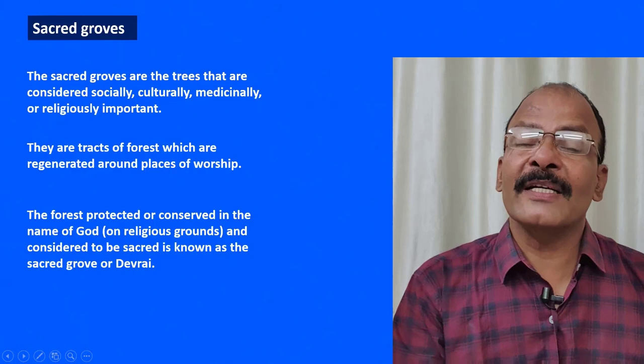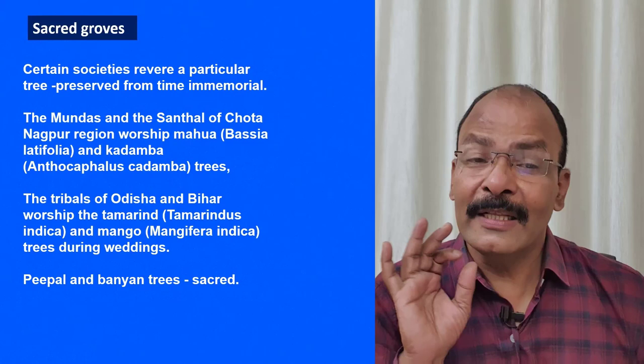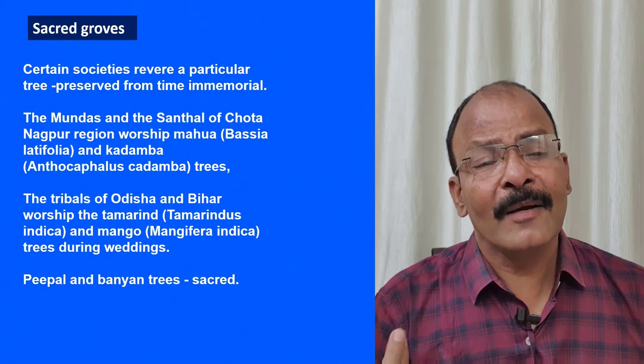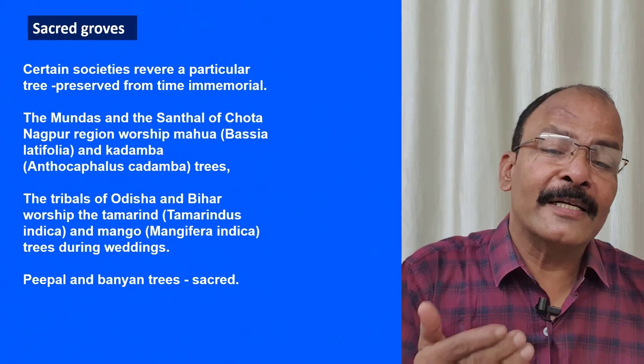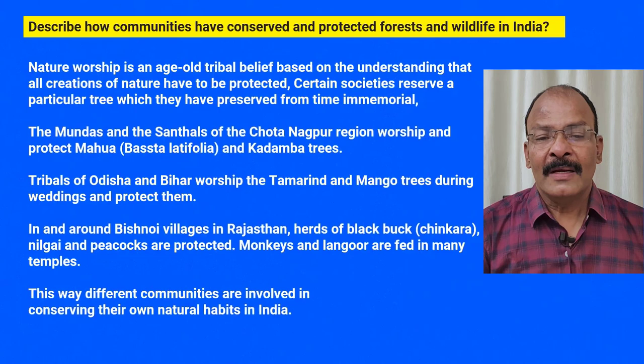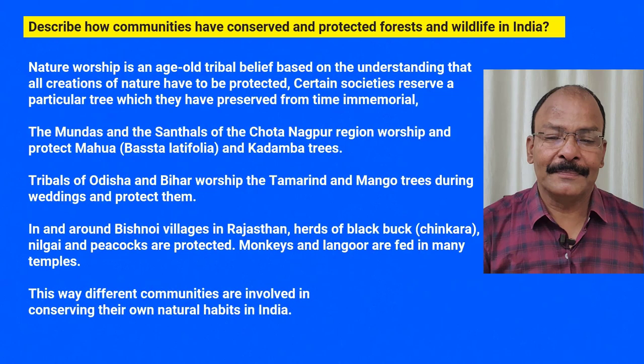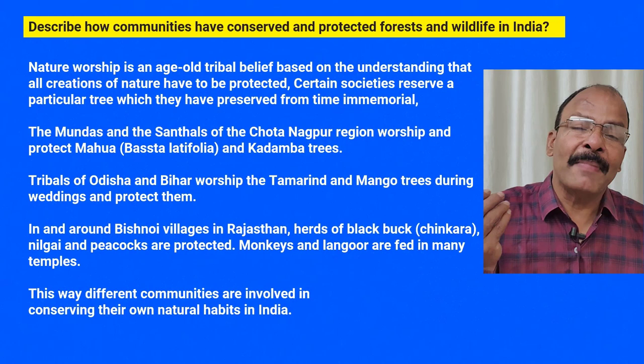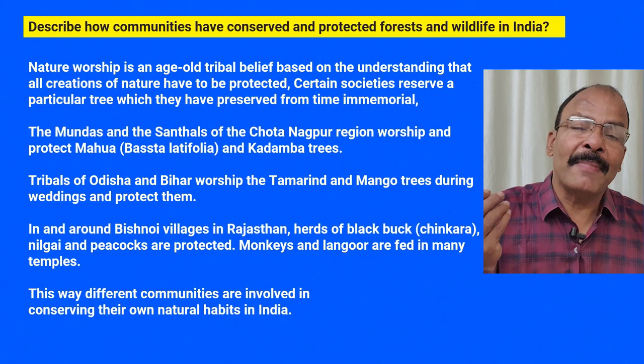Sacred groves are preserved by local communities, not the government. Hunting of animals and cutting of trees are not allowed in these areas. In India, the Mundas and Santhals of Chotanagpur worship Mahua and Kadamba trees. Tribals of Odisha and Bihar worship Tamarind trees. Mango and banyan trees are sacred to people across India. These are all part of the sacred groves tradition, concluding the chapter.